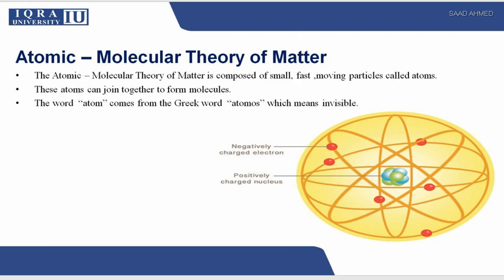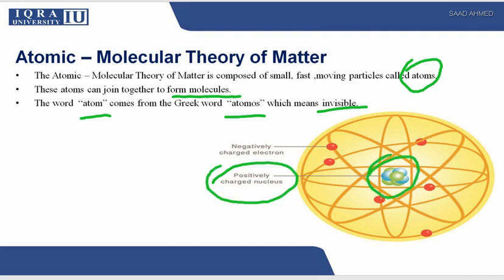Next will be atomic molecular theory of matter. The atom is made of very small fast-moving particles called atoms. These atoms can join together to form a molecule. The atom comes from a Greek word atomos which means indivisible. And as you know you cannot see atoms. The thing which we are interested in is the nucleus here, the center of the atom which is positively charged, and we consider these electrons which are shown here in red as negatively charged particles.